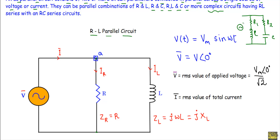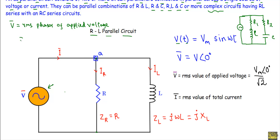We have this voltage source applied across this RL parallel circuit — these are AC parallel circuits. Here we are applying sinusoidal voltage, so instantaneous voltage v(t) will be equal to Vm·sin(ωt). Therefore the RMS phasor of the applied voltage will be vector V equal to V∠φv, where V is the RMS value of applied voltage and φv indicates the initial phase. V equals Vm over root 2, and here the initial phase angle is zero degrees. The total current will be I, and the vector I indicates the RMS phasor of total current.